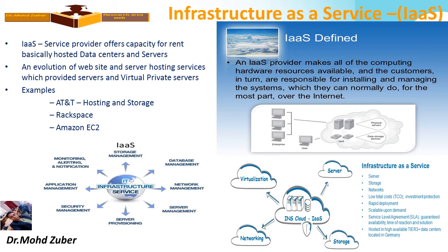Infrastructure as a Service: an IaaS provider makes all computing hardware resources available, and in turn the user is responsible for installing and managing the software. Characteristics of Infrastructure as a Service include server, storage, network, low cost, rapid deployment, scalable upon demand, and hosted high availability. IaaS covers storage management, database management, network management, server management, security, application monitoring, and alert notification. These are all characteristics and features of Infrastructure as a Service.